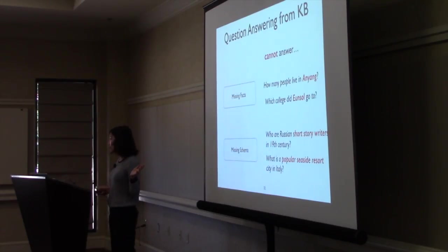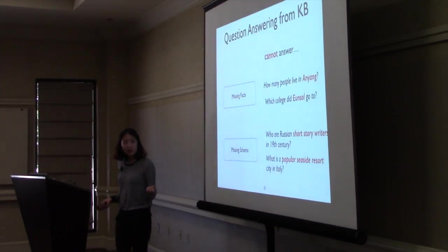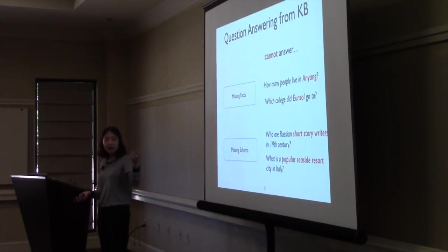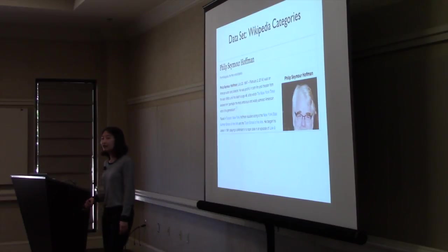On this second set of questions, they cannot answer the questions because the knowledge base does not have the schema to represent this. Even though it's a large knowledge base with like 20,000 types, it doesn't have a concept of short story writer. It's more serious when you consider more abstract concepts or subjective concepts such as popular or seaside that's less well-defined. Usually knowledge base does not cover these facets that people are interested in.